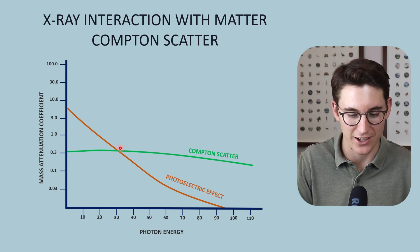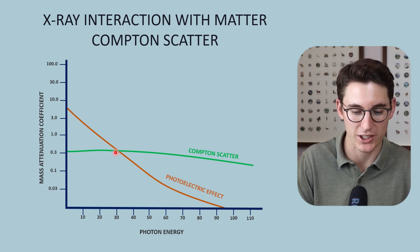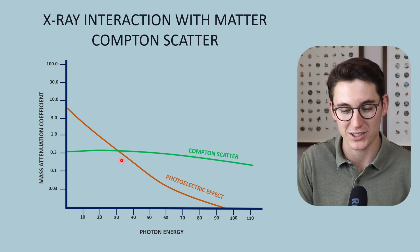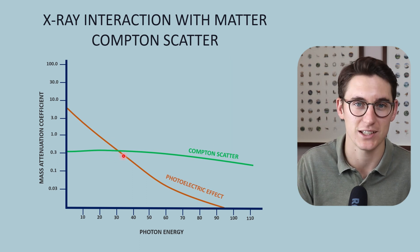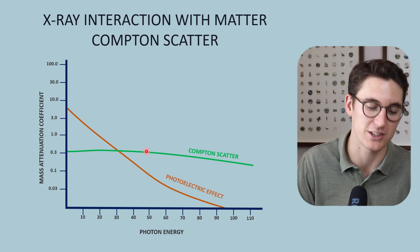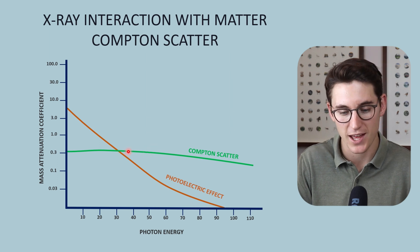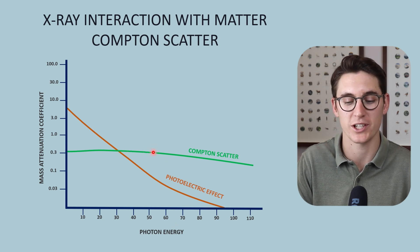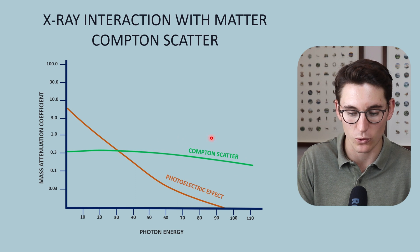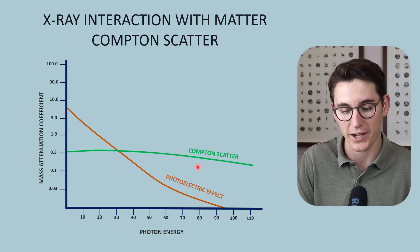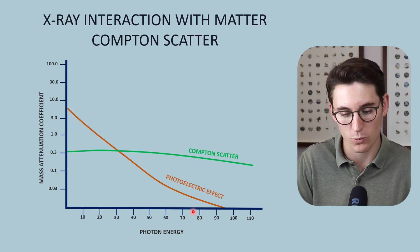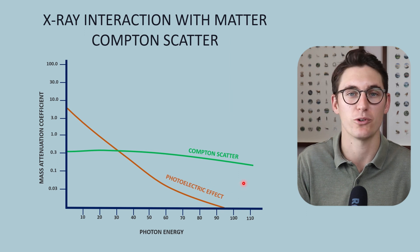At roughly 30 keV photon energy, the amount of photoelectric effect and Compton scatter occurring is roughly equal, or at least the probability of these events is roughly equal. As we increase photon energy, the contribution or interactions provided by Compton scatter are much more in number compared to photoelectric effect.